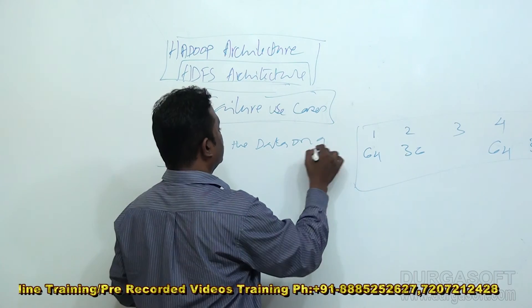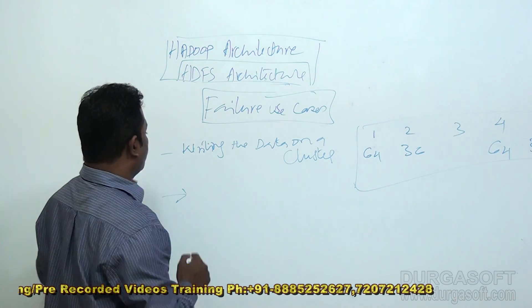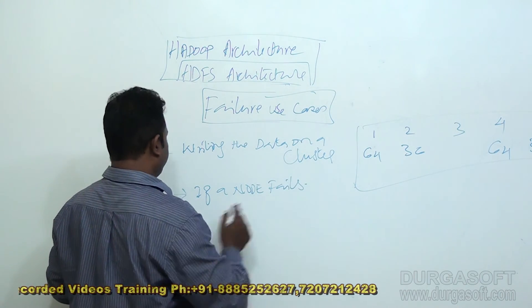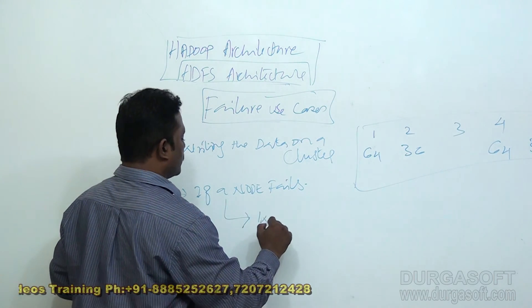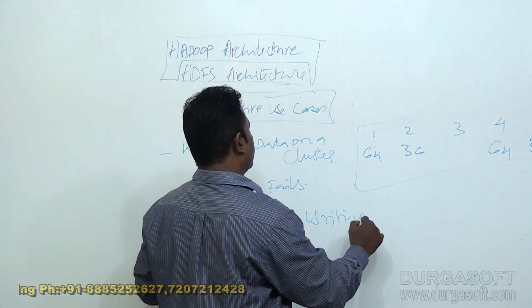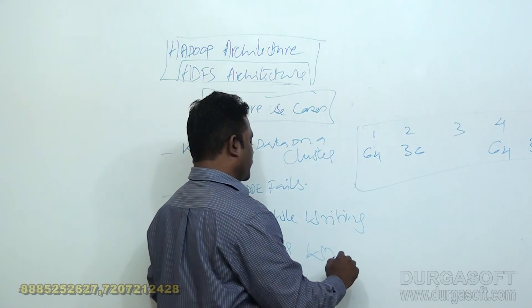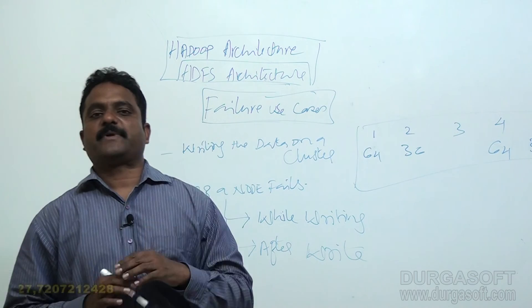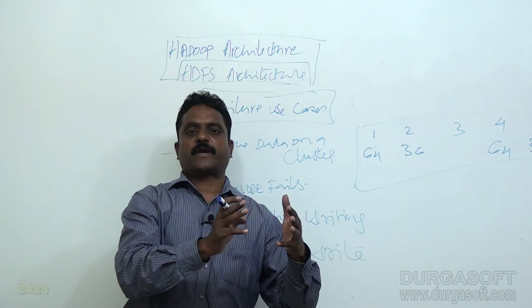What happens if a node fails? Node failure can happen in two ways: one is while writing, and the second is after you complete the process of the write on a cluster. So the failure use cases can happen in different ways — one of the situations is where a node goes down.